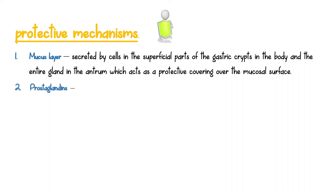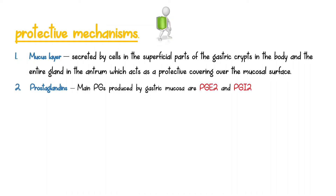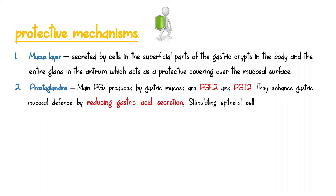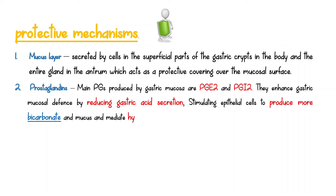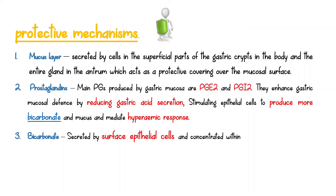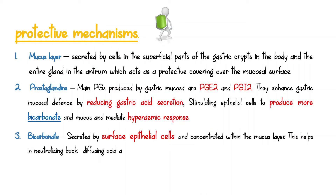Prostaglandins — the main PGs produced by gastric mucosa — are PGE2 and PGI2. They enhance gastric mucosal defense by reducing gastric acid secretion, stimulating epithelial cells to produce more bicarbonate and mucus, and mediating the hyperemic response. Bicarbonate is secreted by surface epithelial cells and concentrated within the mucous layer. This helps in neutralizing back-diffusing acid and maintaining near-neutral pH in the mucous layer.